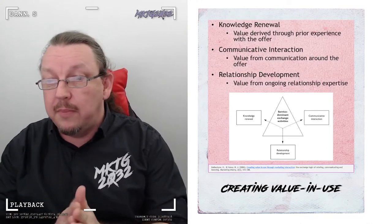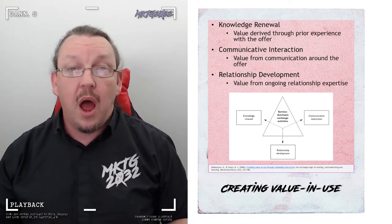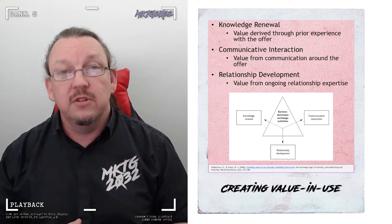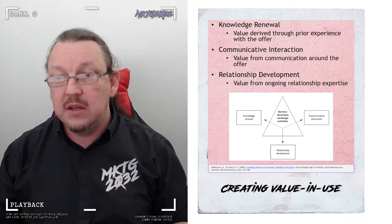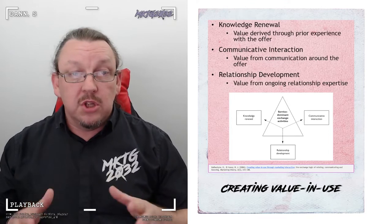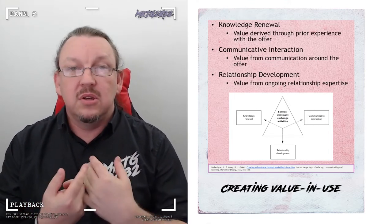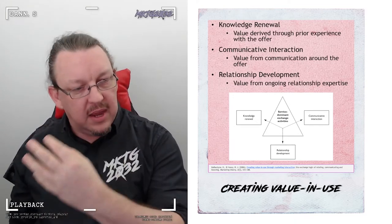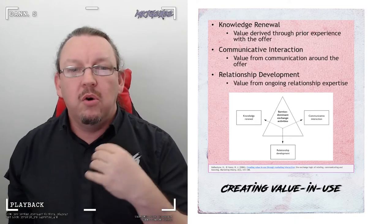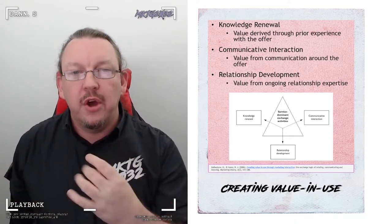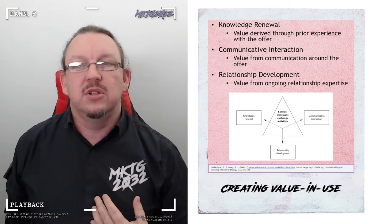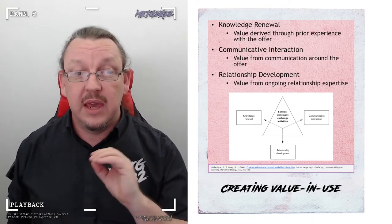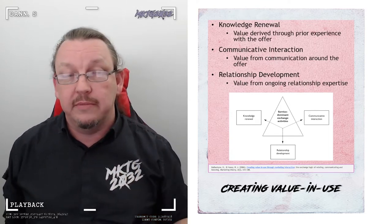All right, creating value and use. Now the Ballantyne and Varey paper 2006 are quite an influential paper on my understanding and how I process co-creation of value. So it's worth having a look at and worth having a read. It was also one of the very early papers to extend the value frameworks and think about how value in ownership, value in use and a whole range of alternate approaches and interpretations. It's also a quick historical footnote. The Australians and the Kiwis totally got into co-creation of value before the Northern Hemisphere did.